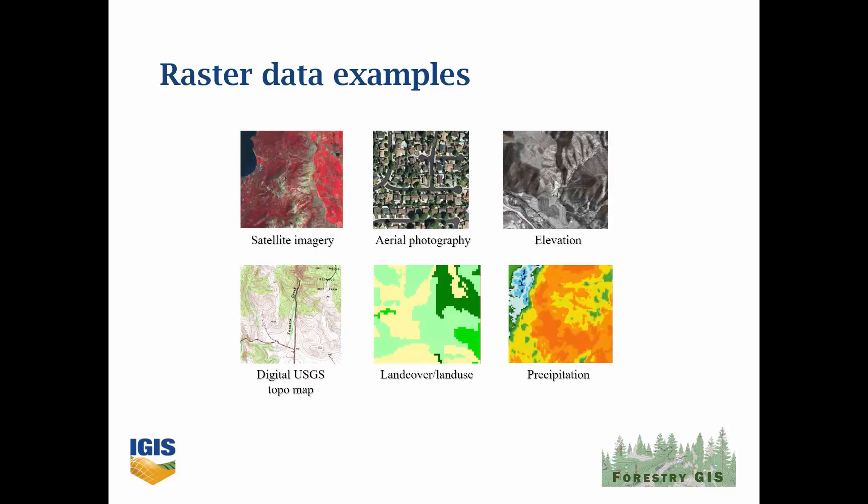Some common raster data examples include most types of imagery, whether that's a normal photo taken from an airplane or a drone, or an image taken with a multi-spectral sensor that measures reflectance in the infrared and thermal parts of the spectrum. Elevation is interesting because it can be represented either as a raster surface where cell values are the elevation at the center of the cell, or as contour lines which are essentially polygons. However, scanned topo maps — which are still very useful and common — are raster layers because they've been scanned from paper.